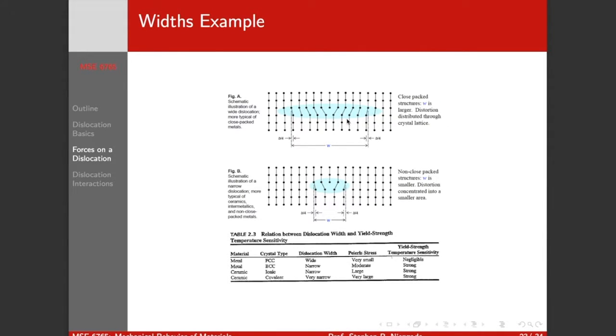It's easier to see here in a close-packed structure, a metal. Here's our b over 4 differential distance. We have to come out a fairly wide way, about five Burgers vectors. So our distortion is distributed throughout the lattice. A large number of atoms are incrementally shifted from their equilibrium positions.